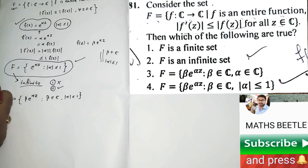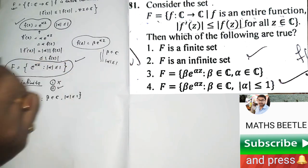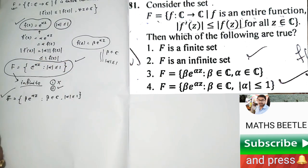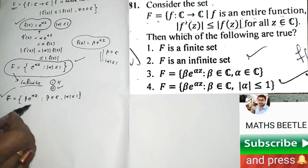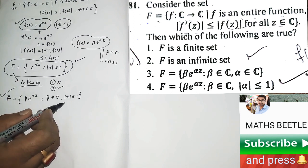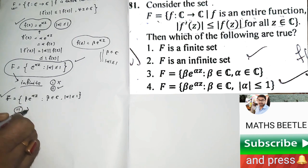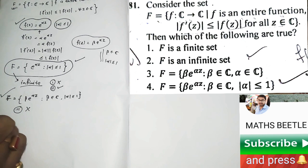This will do the same work for you. That means all the conditions will be fulfilled by this F(z) as well. So this is going to be our correct option. And in the third option there is no restriction on alpha, so in that case it is going to be false. The third option is going to be false.